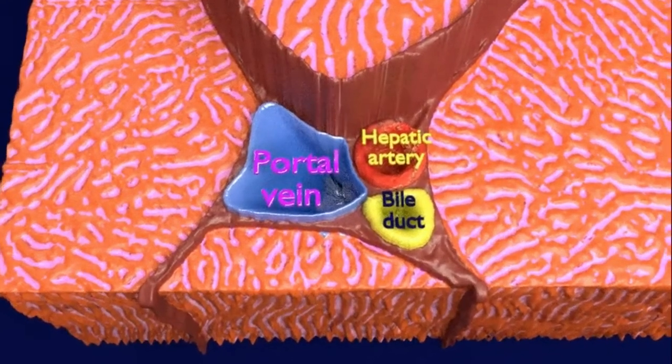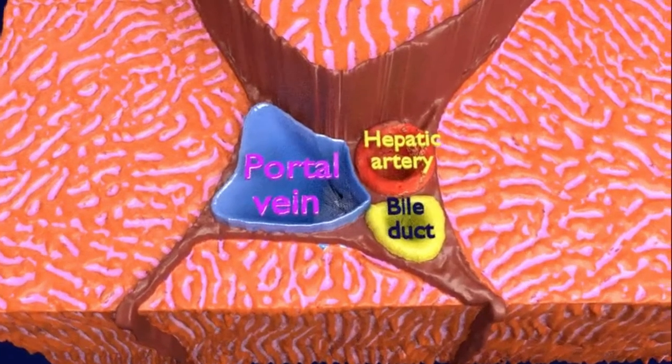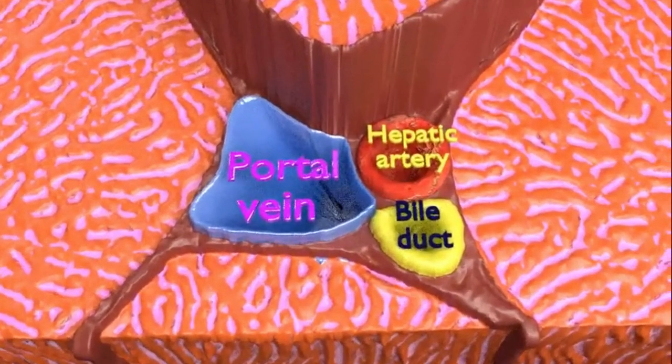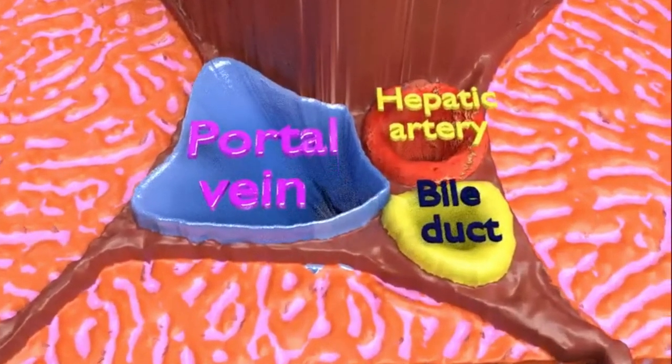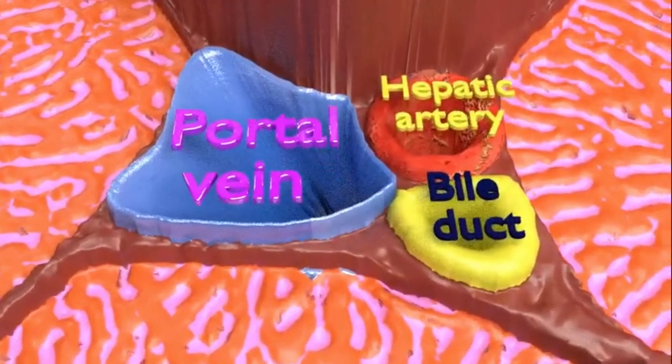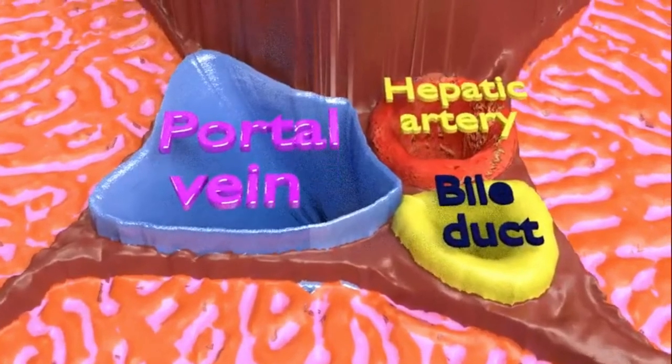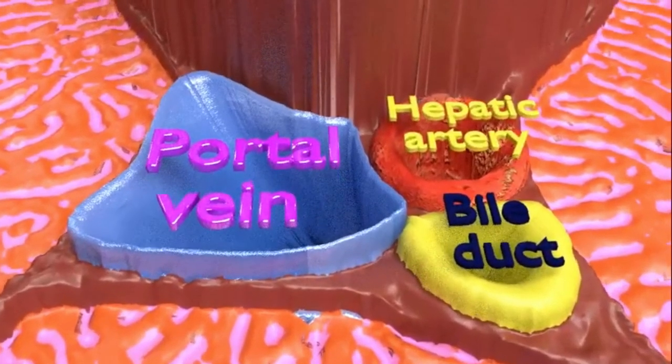Here you can see the hepatic artery shown in red, which carries oxygenated blood to hepatocytes. The portal vein shown in blue color carries blood with nutrients from the small intestine.